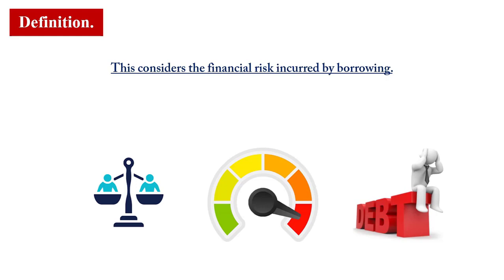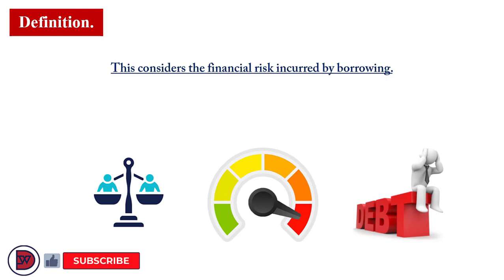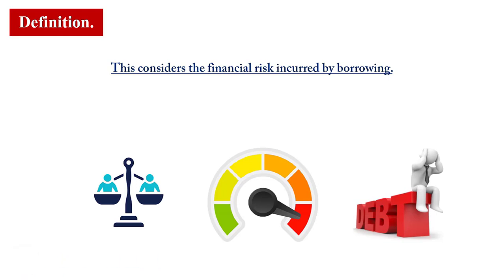The equity holders will fear that their returns will not be paid because debt holders' needs take precedence over theirs. So when there is profit, debt holders will be paid theirs, and when there is a surplus, it gets passed on to the equity holders. That becomes the risk or the fear of the equity holders.